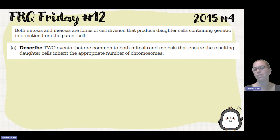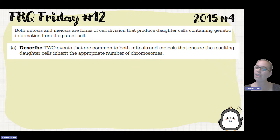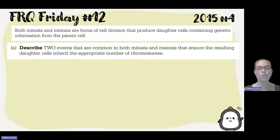Both of these are forms of cell division — they produce daughter cells that contain genetic information from the parent cell. Part A asks us to describe two events that are common to both mitosis and meiosis that ensure the resulting cells inherit an appropriate number of chromosomes.